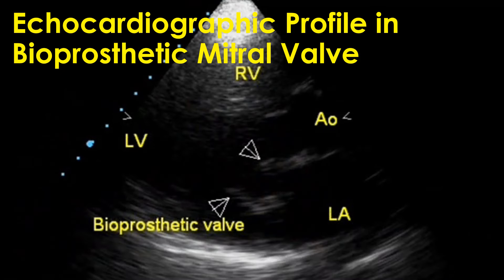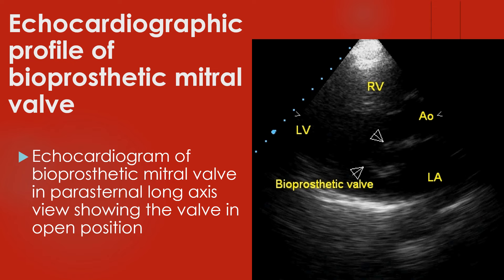Echocardiogram of a bioprosthetic mitral valve in parasternal long axis view, showing the mitral valve in open position. Bioprosthetic valves can be with or without stents, and this image is from a stented bioprosthetic valve.